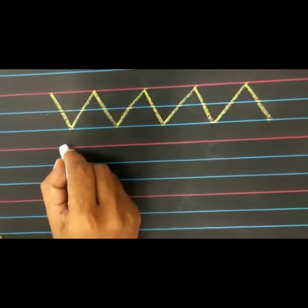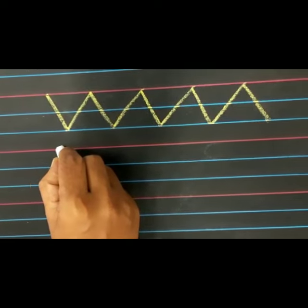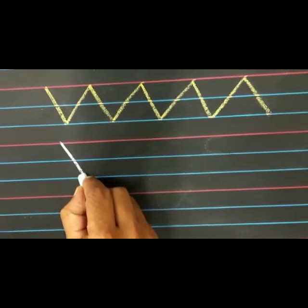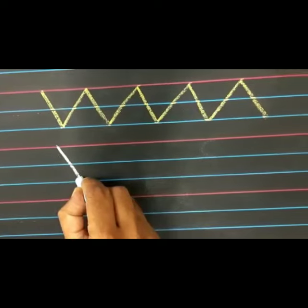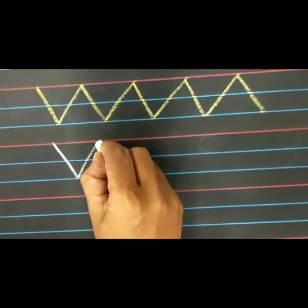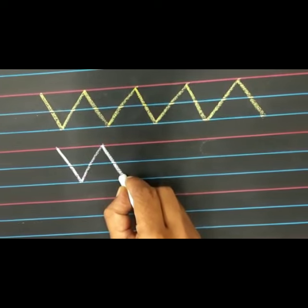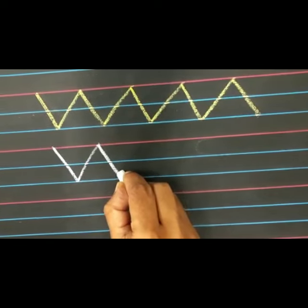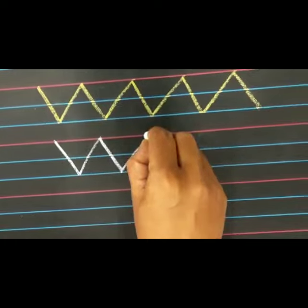Put chalk on the red line and draw a slanting line in downward direction and again slanting line in upward direction. Now don't pick the chalk and continue drawing slanting lines in upward and downward direction like this.